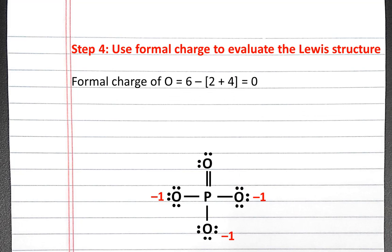So we can calculate the new formal charge of this oxygen atom. And it will be 6 subtract 2 bonds plus 4 lone pair electrons, which is zero.